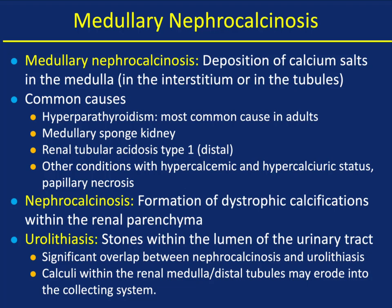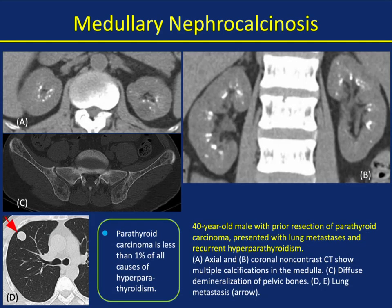Let's go through medullary nephrocalcinosis. Deposition of calcium salts in the medulla — common causes include hyperparathyroidism, sponge kidney, renal tubular acidosis, and other conditions with hypercalcemic and hypercalciuric status like papillary necrosis. Nephrocalcinosis is the formation of dystrophic calcifications within the renal parenchyma, while urolithiasis are stones within the lumen of the urinary tract. There is significant overlap between the two. Calculi within the renal medulla or distal tubules may erode into the collecting system — so while the differences are easy to describe on paper, it may not be so easy in actual cases.